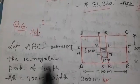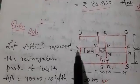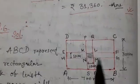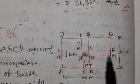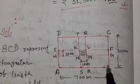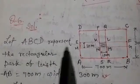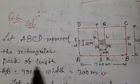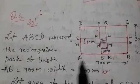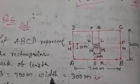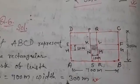Now we solve it. Let ABCD represent a rectangular park of length 700 meter and width 300 meter. All information are written here. Let ABCD represent the rectangular park where length AB is 700 meter and width BC is 300 meter.